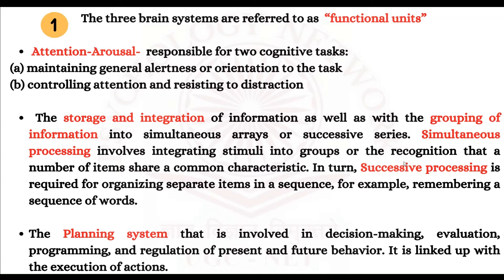The third brain system is the planning system, which is involved in decision making, evaluating, programming, and regulation of present and future behavior. For example, if two job offers are given to you, which one you would choose and how it would affect your present and future behavior — that entire process is the planning system.